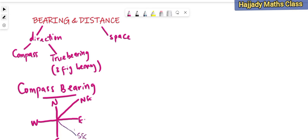I want you to take note of something: we take bearing from the north, especially from these vertical lines. From the north is where we take the bearing, and also here we take it from the south. So the bearing starts from here — meaning from north we are going to east, so we have northeast here. And here we are going from the south to east. Then from the south we are going to the west, so here we have the southwest.